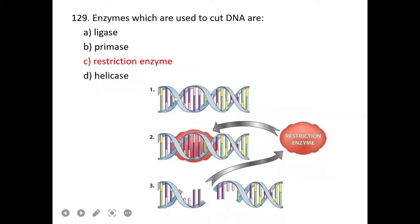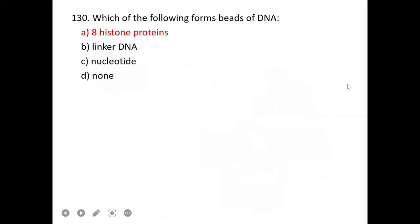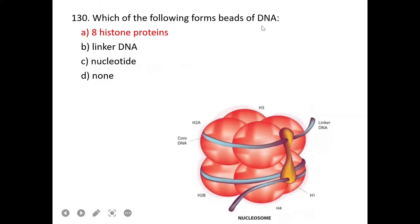GUS genes were first reported by Richard Anthony Jefferson. D is correct. These genes are basically reporter genes which give blue color when present with plant genome.